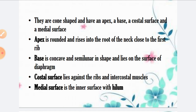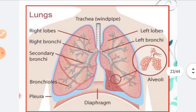The costal surface lies against the ribs and intercostal muscles — this outer portion is known as the costal surface. The medial surface is the inner portion, and this is where the hilum is located. At the hilum, the trachea divides into bronchi, and the pulmonary artery and pulmonary veins enter and exit. The hilum area is on the medial surface.